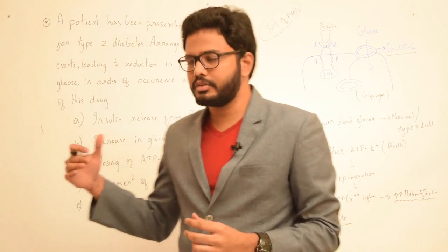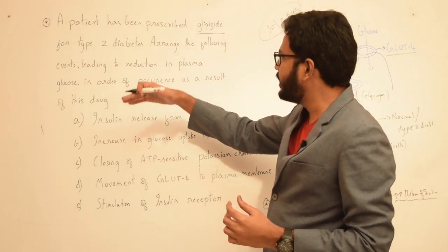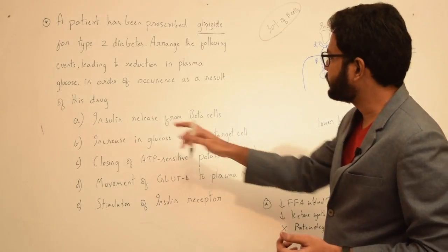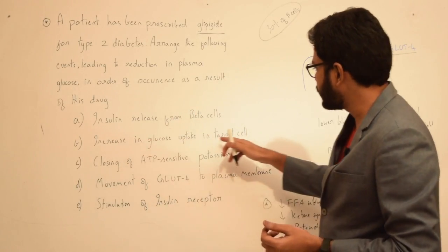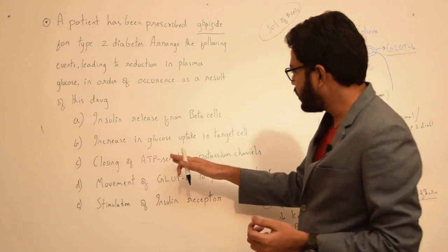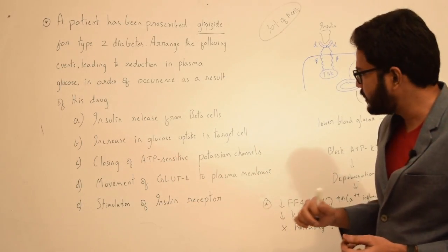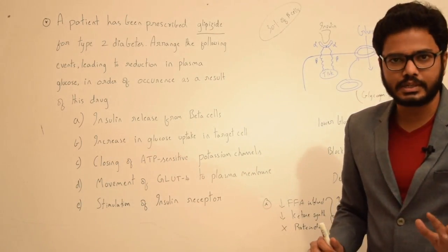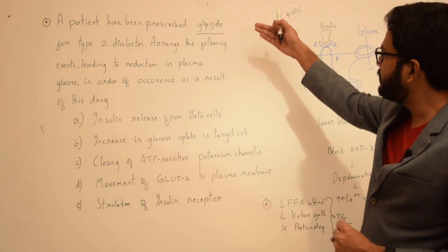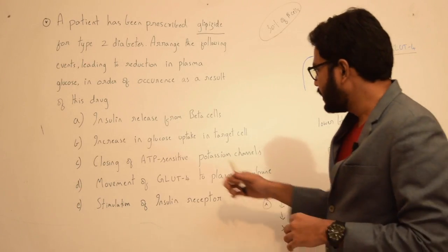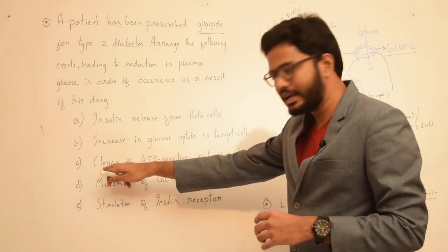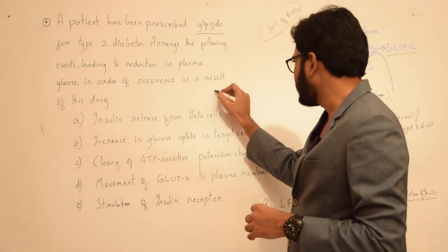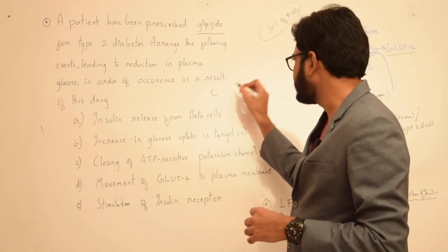Now let's come back to the question and options and discuss the various sequence of events in correct order. We have: A — insulin release from beta cells; B — increase in glucose uptake in target cell; C — closing of ATP-sensitive potassium channels; D — movement of GLUT4 to plasma membrane; E — stimulation of insulin receptors. So first, glipizide as a second generation sulfonylurea causes closing of ATP-sensitive potassium channels. The first reaction happening is C.